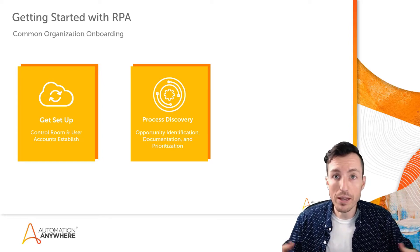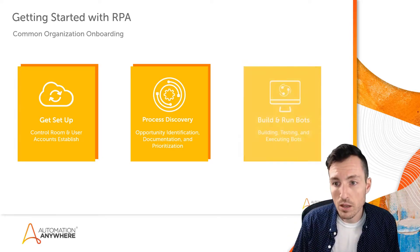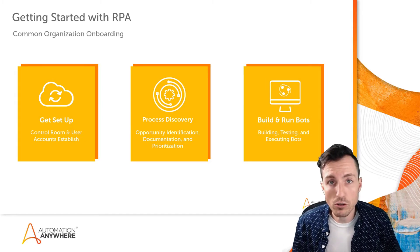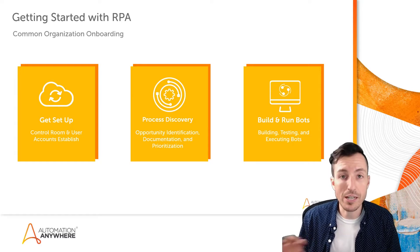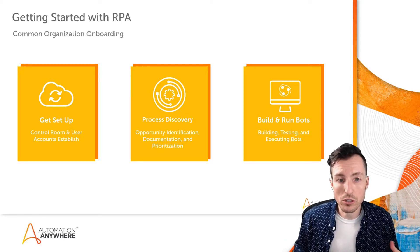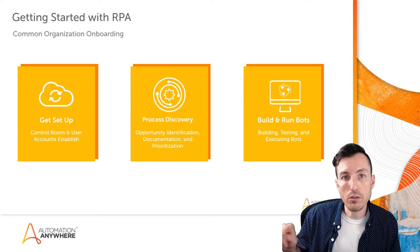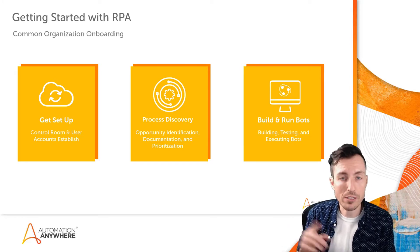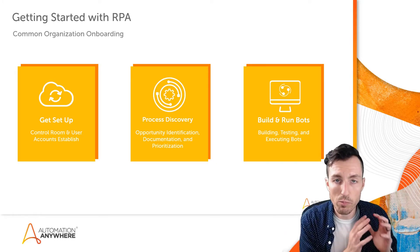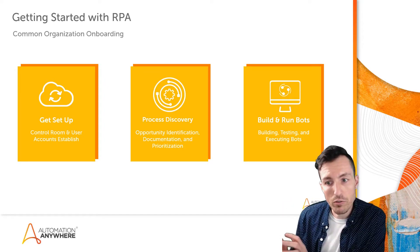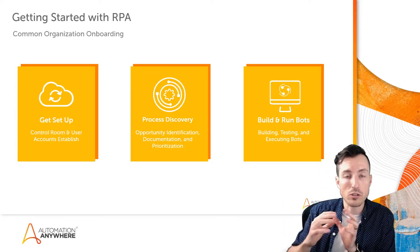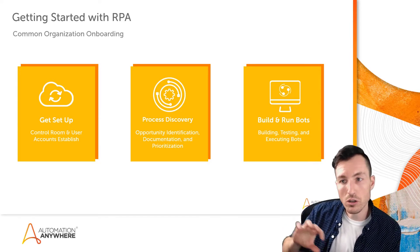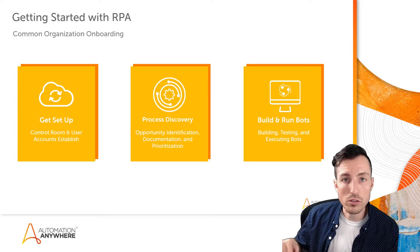You may also be exploring new opportunities as you go along. The final part is building and running your bots — building, testing, and executing those bots in a production or test environment. What happens with an organization is you get set up once, but then you go through process discovery and building and running bots over and over again in cycles. You queue up opportunities from your process discovery bucket and feed those over into your building and running bots section, so that as you free up resources and have time to build more bots, you can turn those into real automations that can run in production.